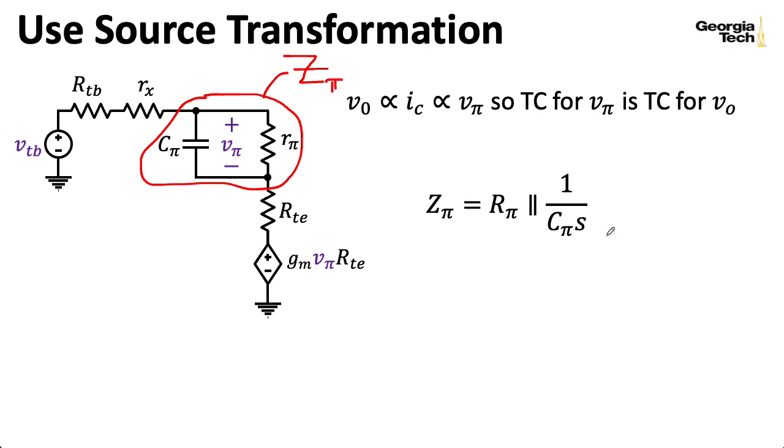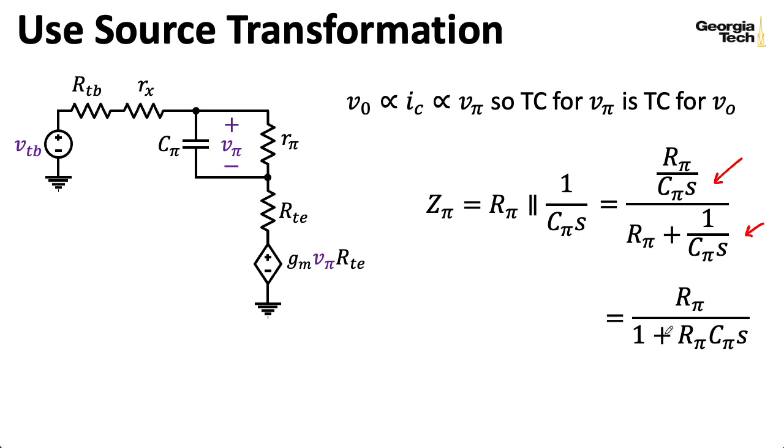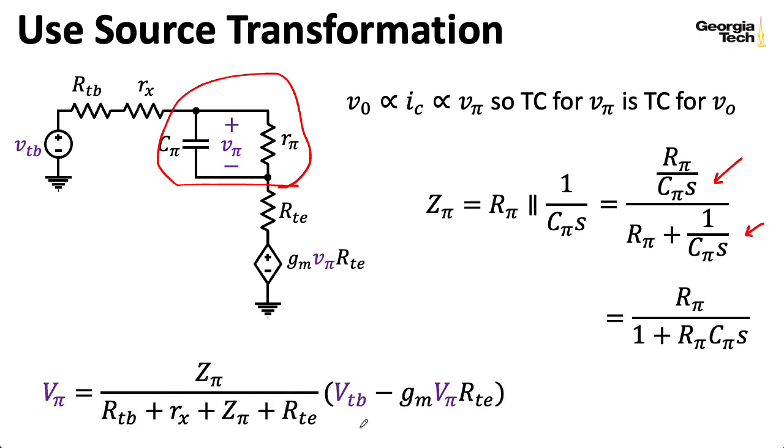So I'm going to take this parallel combination of Cpi and Rpi and call it Z subpi. And so if we compute that parallel combination out explicitly, I multiply Rpi times 1 over Cpi in the numerator, and then I add these things in the denominator. And then let me multiply the numerator and the denominator by Cpi s to clear out the fraction. And I'll write this as Rpi over 1 plus Rpi Cpi s. So that's this impedance here. Now, if I want to think about what Vpi is, well, I have a voltage divider. I have a voltage difference Vtb minus Gm Vpi Rte. So that difference is here. Notice now I'm using uppercase letters to represent the Laplace domain versions of the variables. And I'm also usually suppressing the explicit notation of the s variable. So you can imagine Vtb here has an s and Vpi here has an s. Everybody except the resistors has an s, but I'm avoiding writing the s to try to keep the equation small.